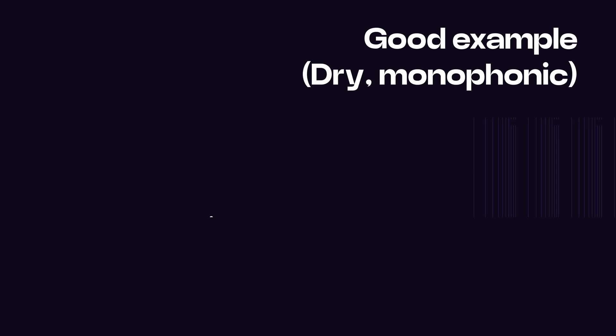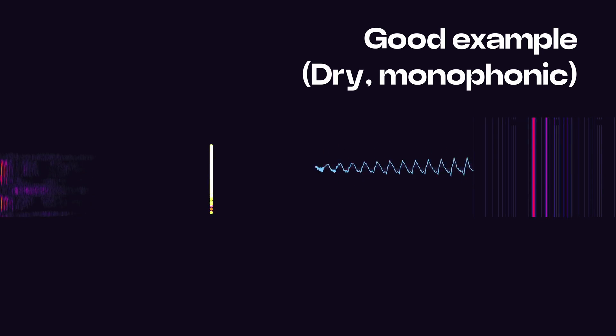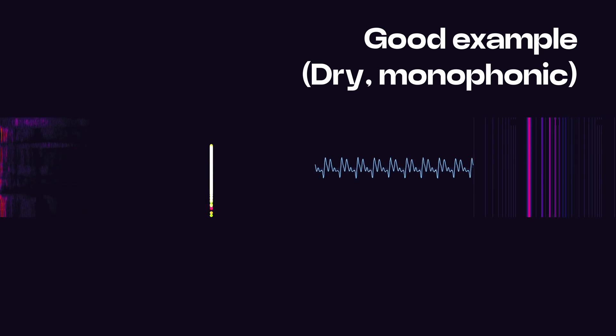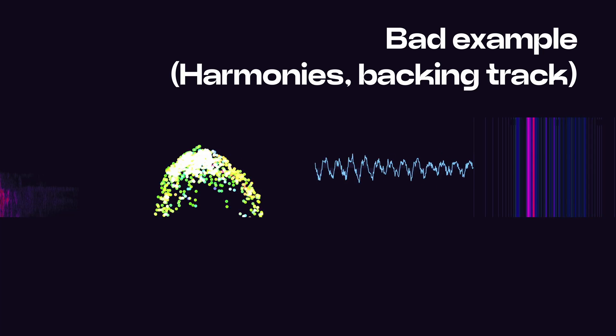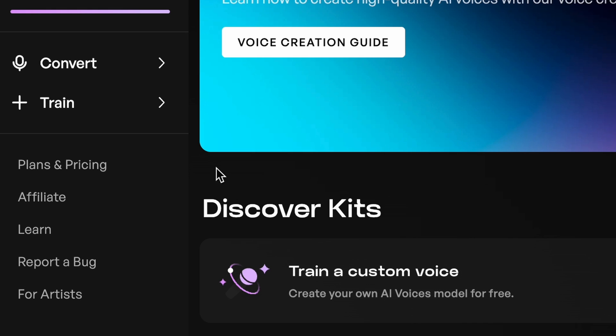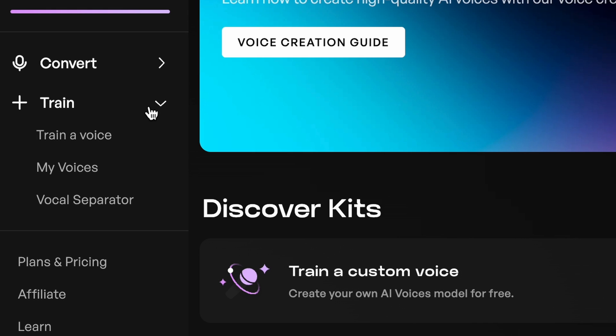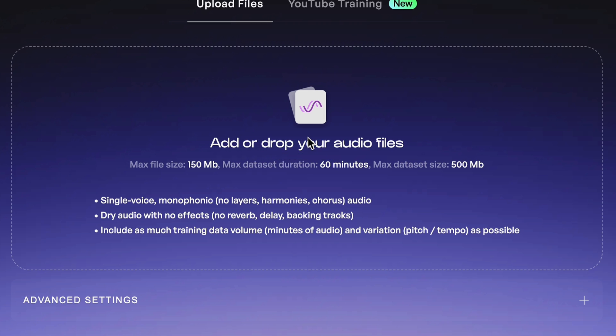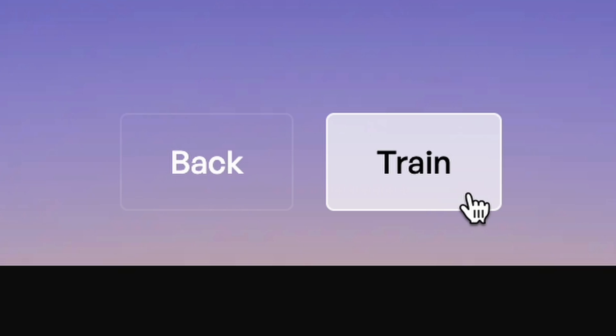Here's a good example, and here's an example of what not to include. If you're ready to go, head over to kits.ai, upload your data set, and start training. Now let's get into exactly what your data set should look like.